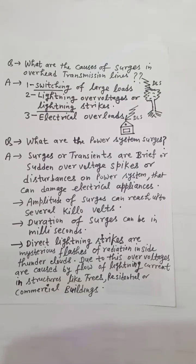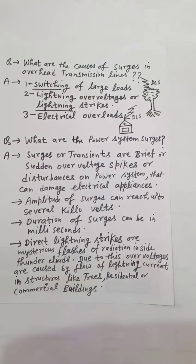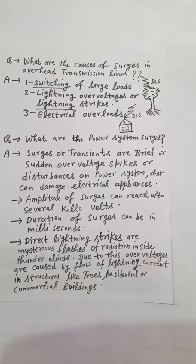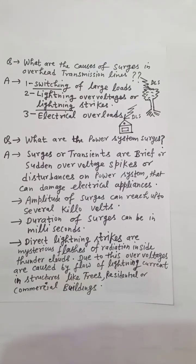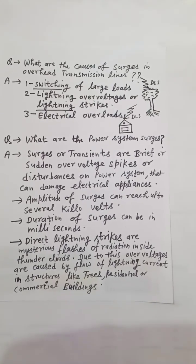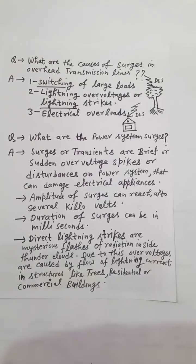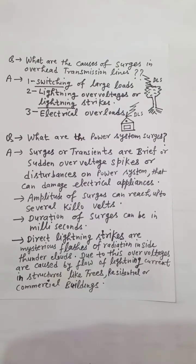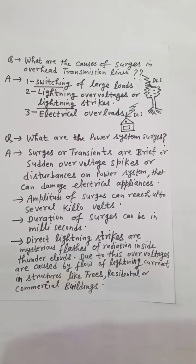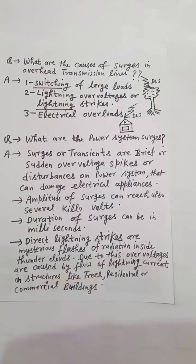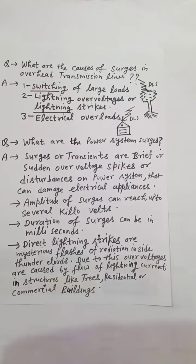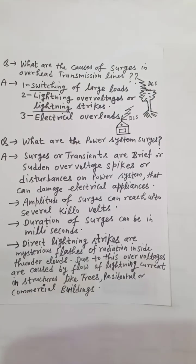Due to lightning, overvoltages are caused by the flow of lightning current in structures like trees and residential or commercial buildings.